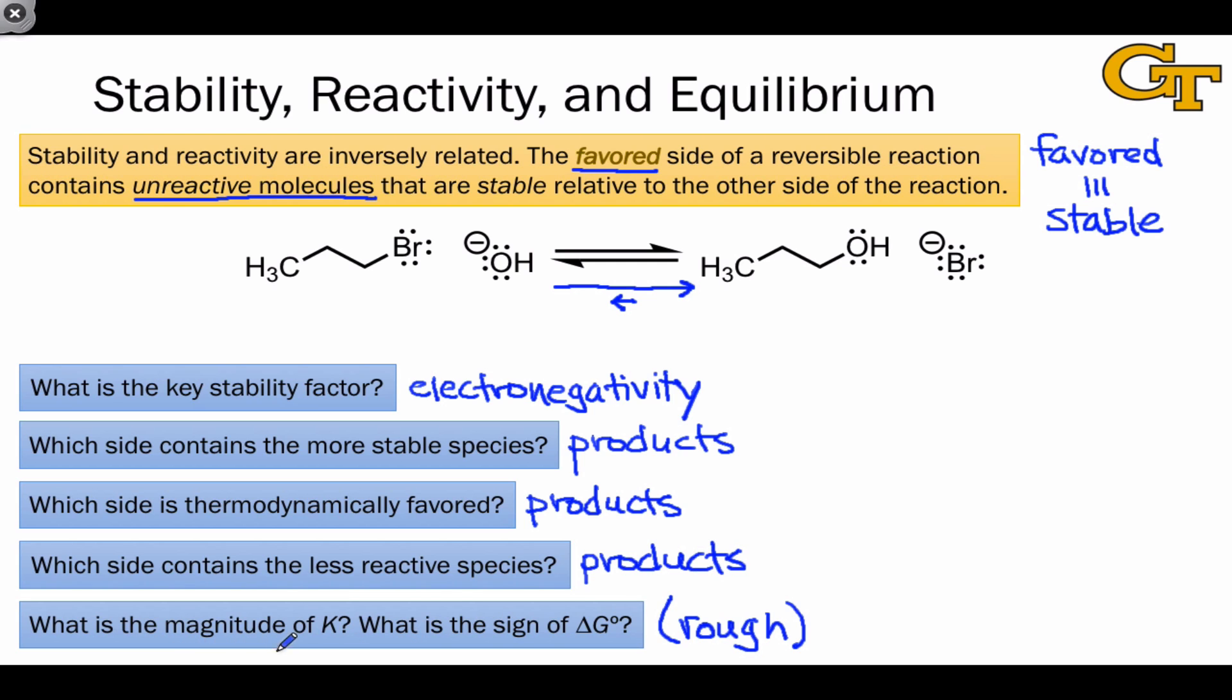For the time being, I'm going to leave open this question of the magnitude of K and the sign of delta G. But what we can certainly say is for the reaction here as written, the free energy change is negative and the K value is significantly greater than 1. The products are heavily favored in this case.